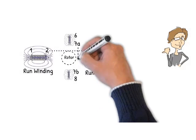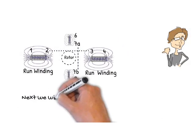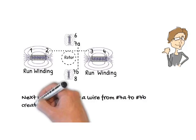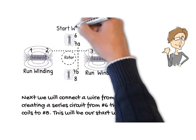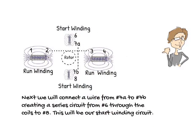Next, we will connect a wire from 7A to 7B, creating a series circuit from number six through the coils to number eight. This will be our start winding circuit.